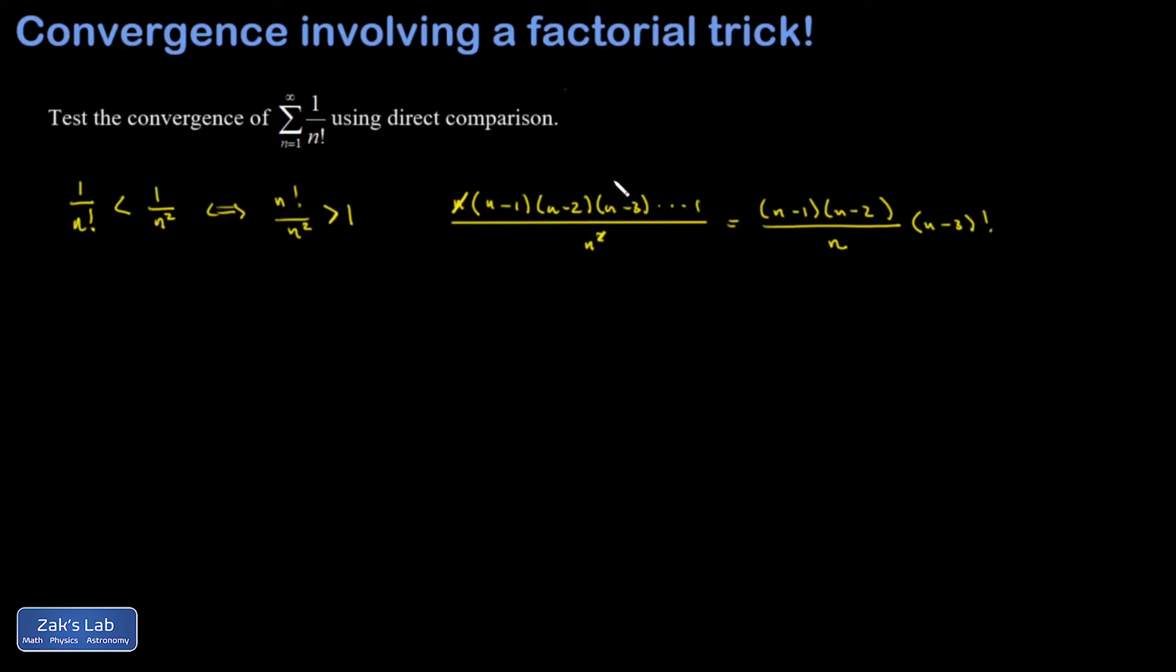This is a really common thing to do with factorials when we're looking at convergence. We split off part of them and say, okay, I got the first two factors, n minus 1, n minus 2. The remaining portion there is n minus 3 factorial.